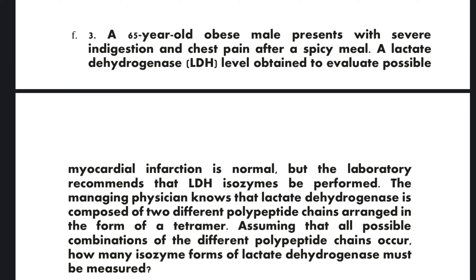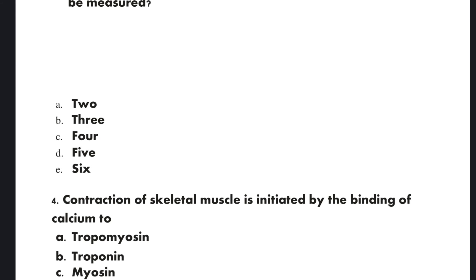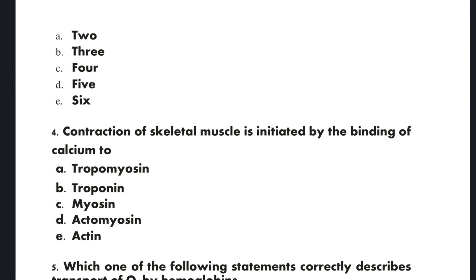Question 3: A 65-year-old obese male presents with severe indigestion and chest pain after a spicy meal. A lactate dehydrogenase (LDH) level obtained to evaluate possible myocardial infarction is normal, but the laboratory recommends that LDH isozymes be performed. The managing physician knows that lactate dehydrogenase is composed of two different polypeptides arranged as a tetramer. Assuming all possible combinations can occur, how many isozyme forms must be measured? Options: A) 2, B) 3, C) 4, D) 5, E) 6. The correct option is D: 5.